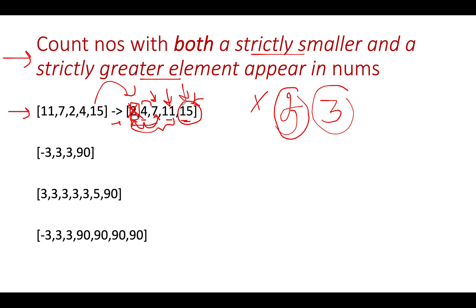Let's walk through another example: minus 3, 3, 3, 90 — which happens to be sorted. The minimum (minus 3) will not contribute, and the maximum (90) will not contribute. What's left are only the two elements 3 and 3, so the answer is 2.